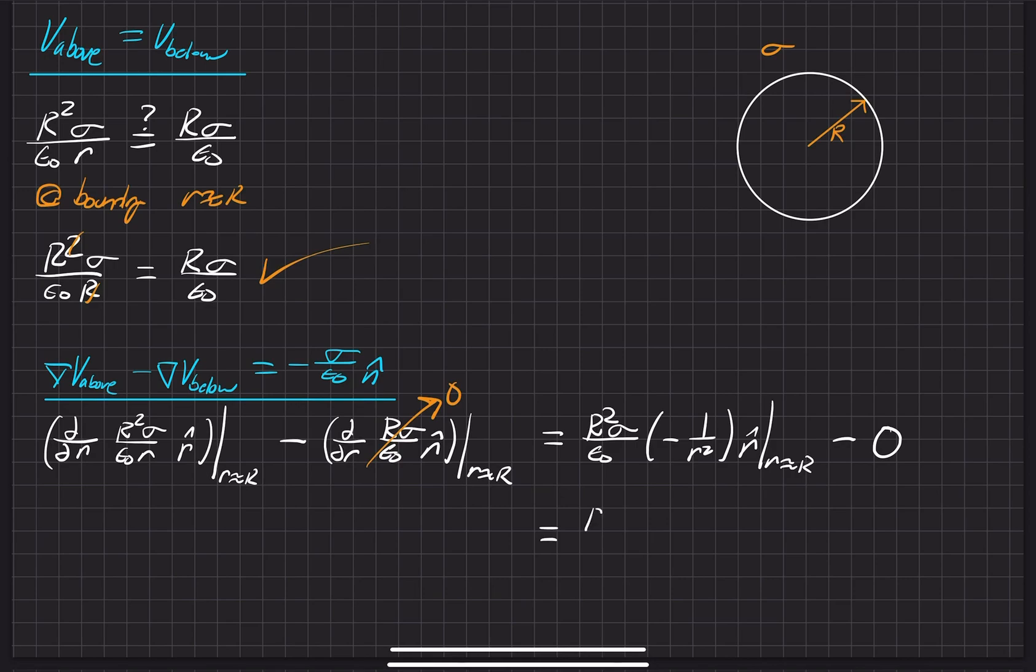After this next step, we'll bring our constants down. And then now we just substitute R equals big R for this one over R squared. Pull this negative 1, 1 over R squared out here. It's equal to negative sigma over epsilon naught pointing in the R hat direction, pointing in the direction normal to the surface of the charge. And that's exactly what we wanted to show here.